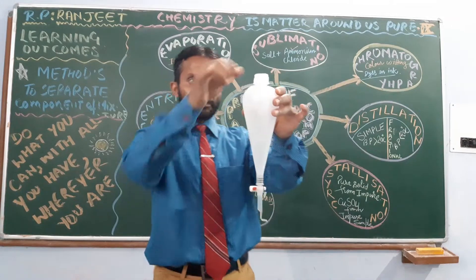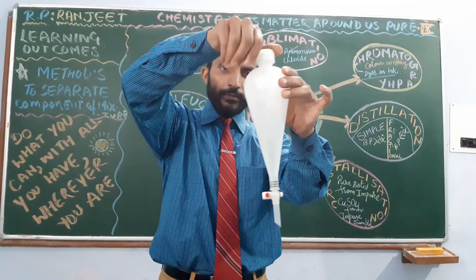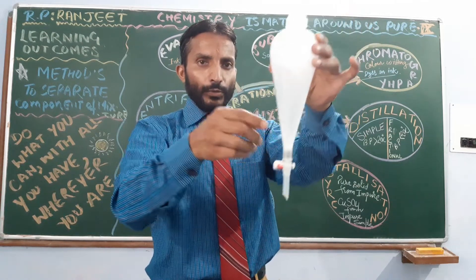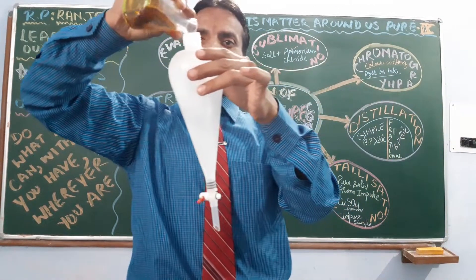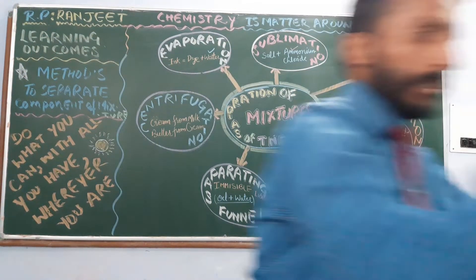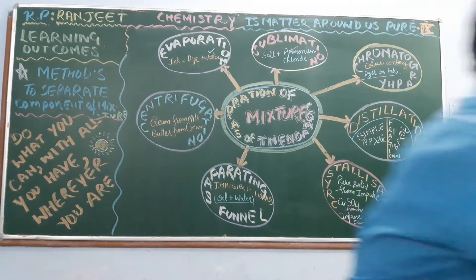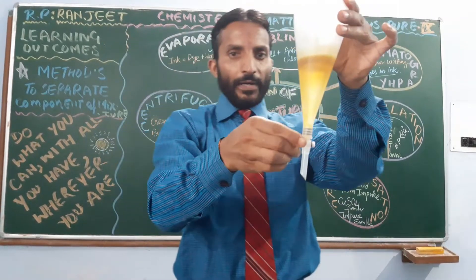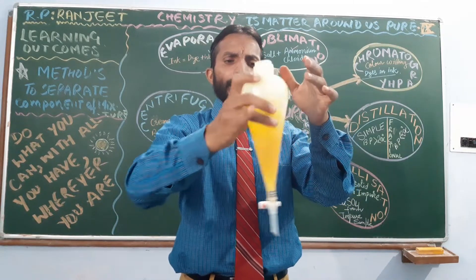This is the separating funnel. I will open the lid and fill material here. This is the top stopper — I can open it and the liquid will come out. I am mixing — this is your oil — and I will mix it with water. I will make the mixture, then lower the lid. I will shake this separating funnel. We can separate different immiscible components this way.